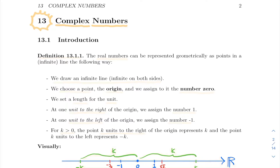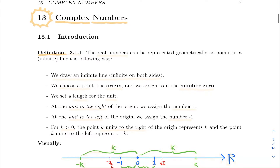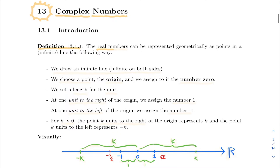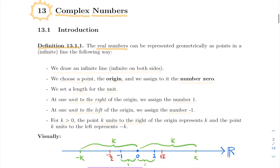Before we can talk about complex numbers, we need to go over the definition of what the real numbers are — the ones that we're used to. In this chapter, we really want to talk about numbers from a geometric point of view, so everything done here will have a geometric origin, including the real numbers. The first thing — one way to introduce real numbers is to first draw an infinite line.